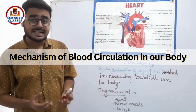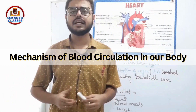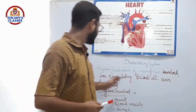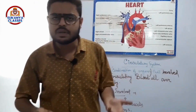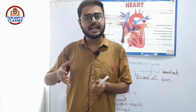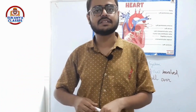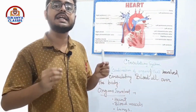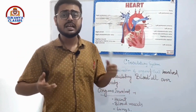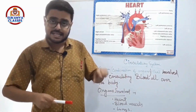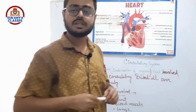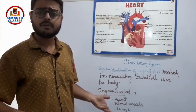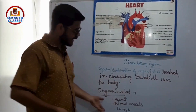Today we will learn the mechanism of blood circulation in our body system. The circulatory system is the combination of organs involved in circulating blood all over the body. Circulation is needed because blood carries oxygen and all the important substances — nutrients, oxygen, water — to each and every cell. The major organs involved are the heart, blood vessels, and lungs.